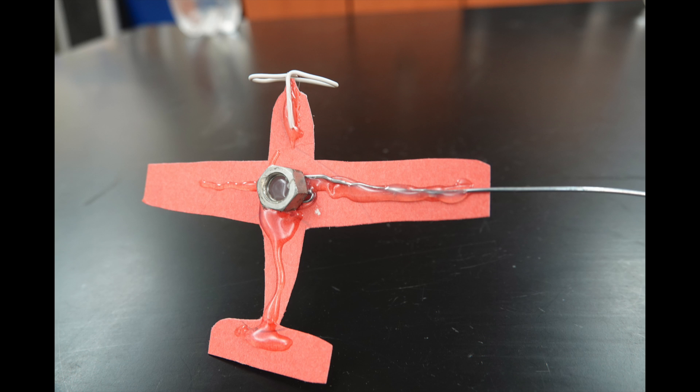I used a thin piece of wire to make the propeller, added a nut, and the long balancing wire, and all three of these were glued to the undercarriage of the plane using hot glue.